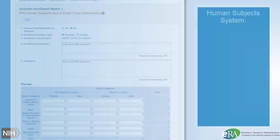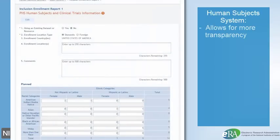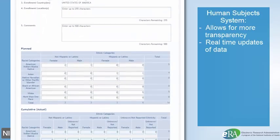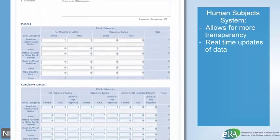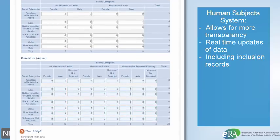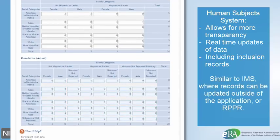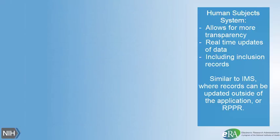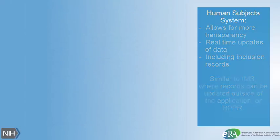This new system allows more transparent and real-time updates of human subjects data, including inclusion records. You may be familiar with this type of approach for managing inclusion, where you can update the inclusion records directly in the system, outside of the application or RPPR.